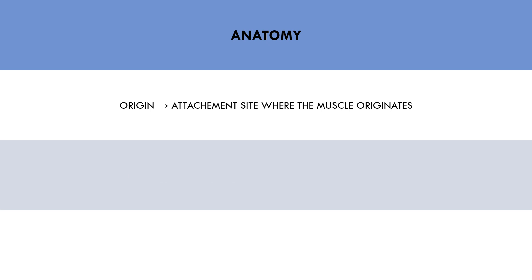The second anatomical factor to consider is the insertion point. The insertion point is simply the other end of the muscle where it attaches. Much like the origin, the insertion of a muscle also usually attaches to a bone via a tendon. Origin and insertion points are exactly the same thing, although the origin is used to describe the attachment point closest to the midline of the body, while the insertion point is used to describe the attachment site furthest from the midline.